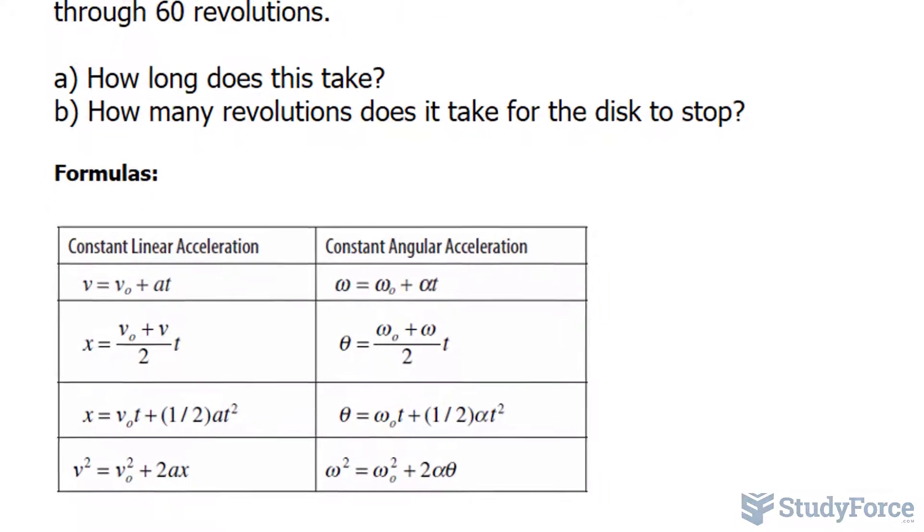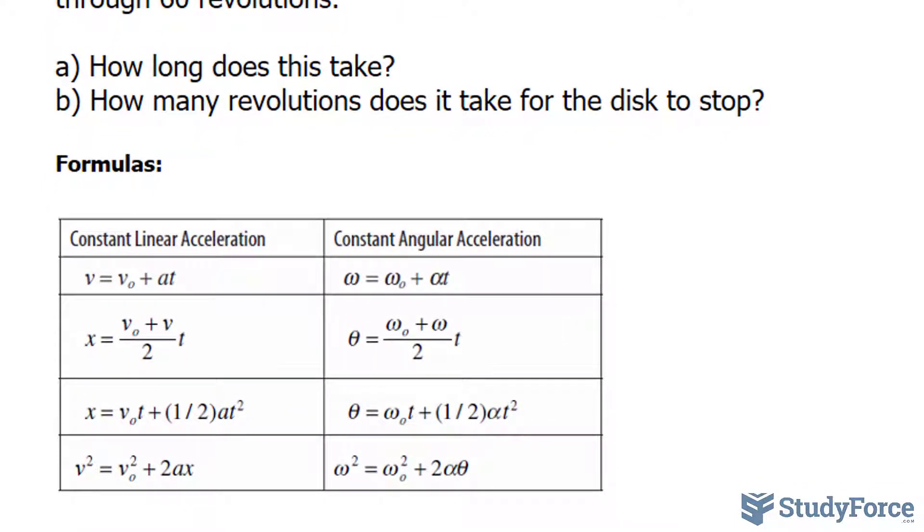Now underneath I've provided two columns of formulas. The column on your left represents linear motion formulas and the one on your right represents angular motion. Now as the name implies, the ones on the right relate the motion of something along a circular path to the angular motion.